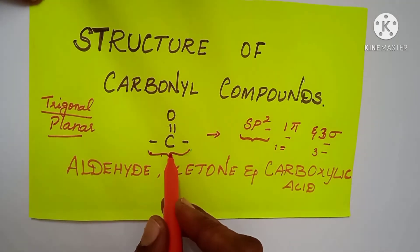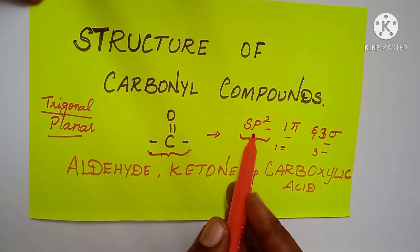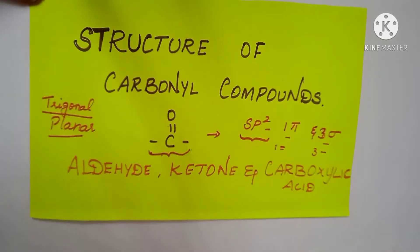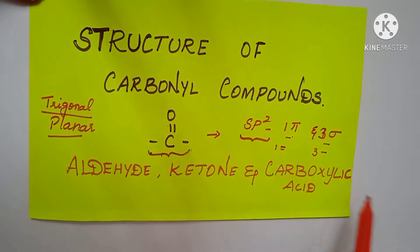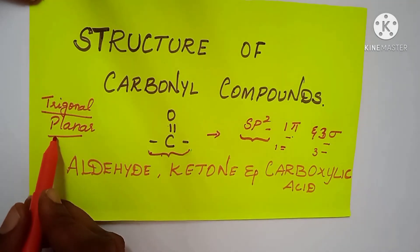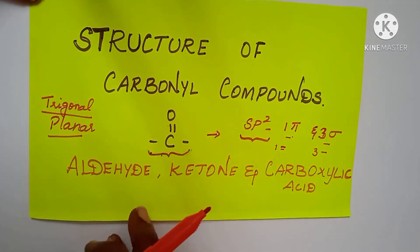So what is the hybridization of carbonyl compounds? SP2 hybridization. SP2 hybridization means 1 pi bond and 3 sigma bonds. So what is the structure? Trigonal planar structure. For that only we are going to discuss.